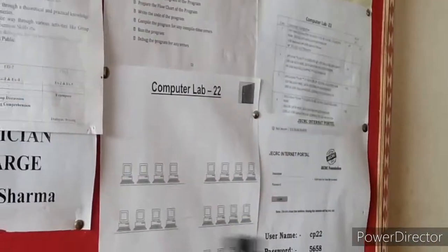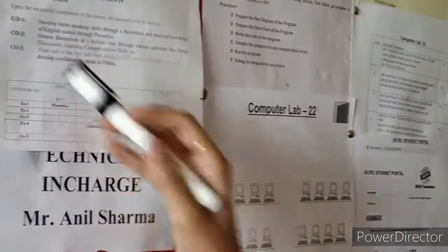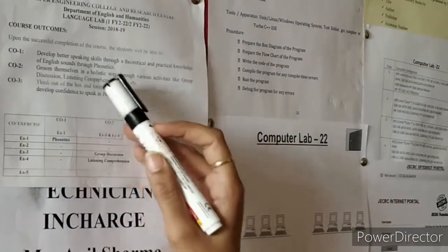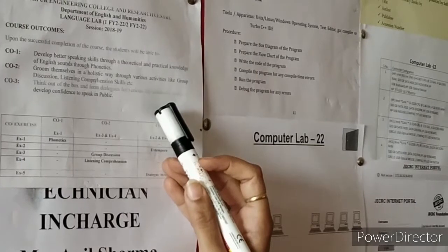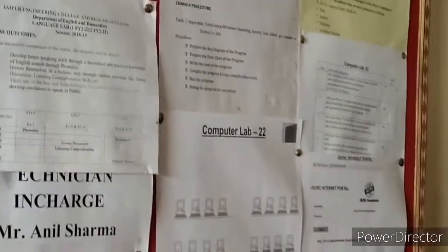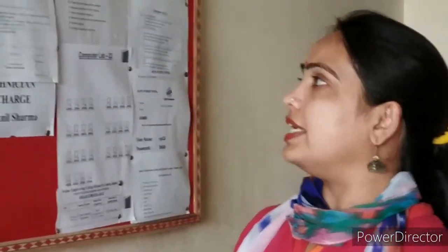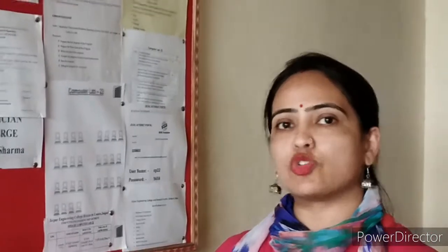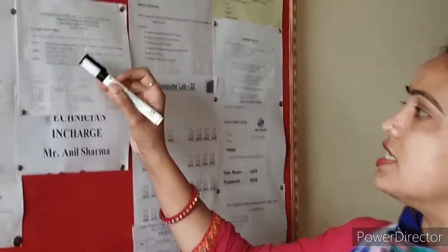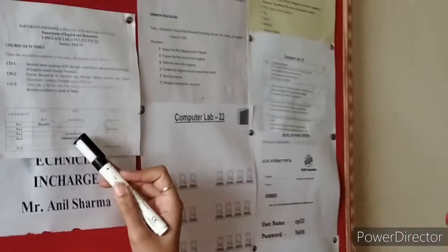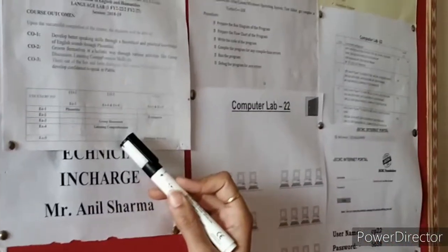The second CO tells that students will groom themselves in a holistic way through various activities like group discussion and listening comprehension skills. After completing these five topics, our students are going to groom themselves, and this CO covers group discussions and listening comprehension, which are two topics of our language lab.